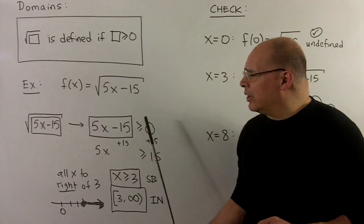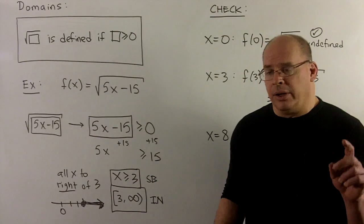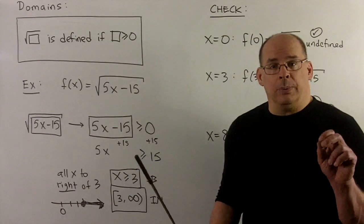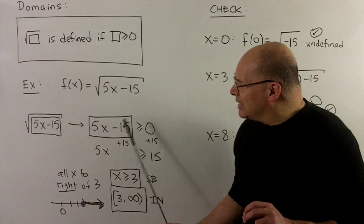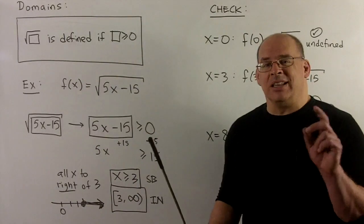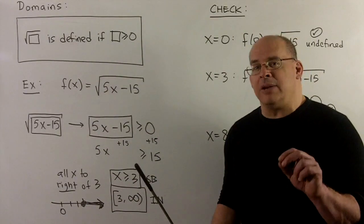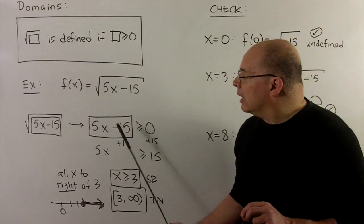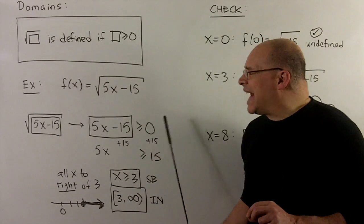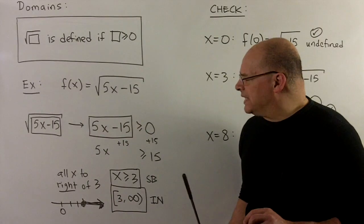5x minus 15 greater than or equal to zero is something that we know how to do. We do the business of isolation of x, so that's just a linear equality with some care taken for the inequality. I'll add 15 to both sides. That gives me a 5x greater than or equal to 15.